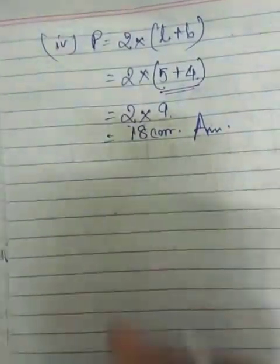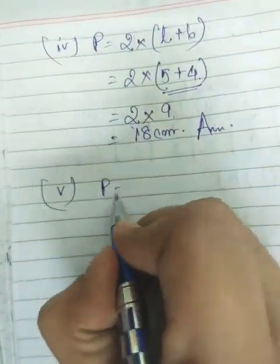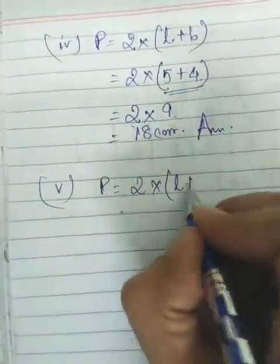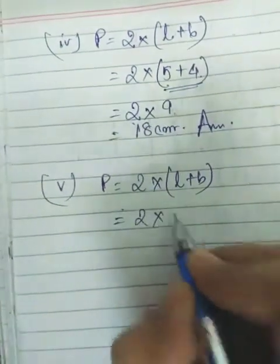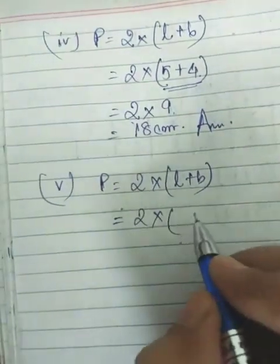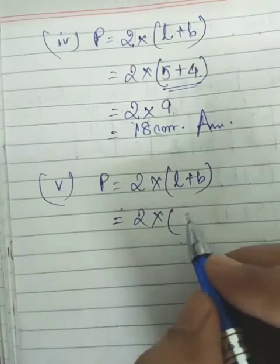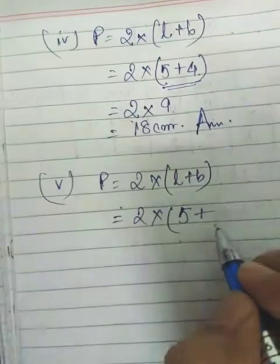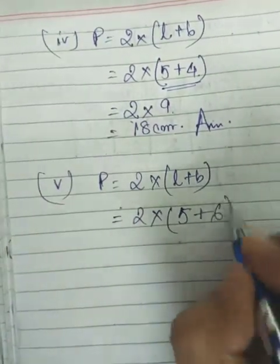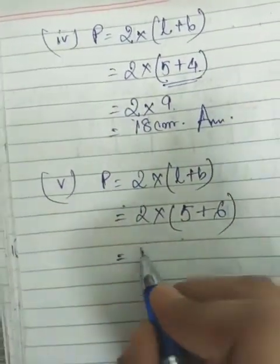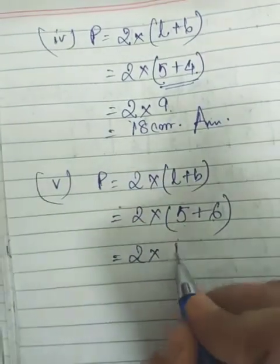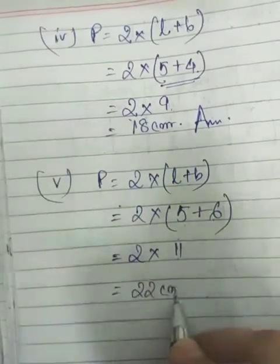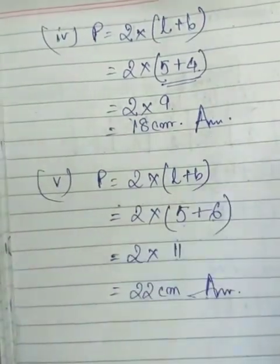And the last one: perimeter of a rectangle is equal to 2 into (length plus breadth). The question gives length as 5 cm and breadth as 6 cm. So it will be 2 into (5 plus 6), which is 2 into 11, giving 22 centimeters — that is the answer.